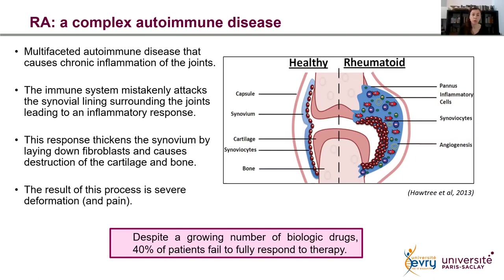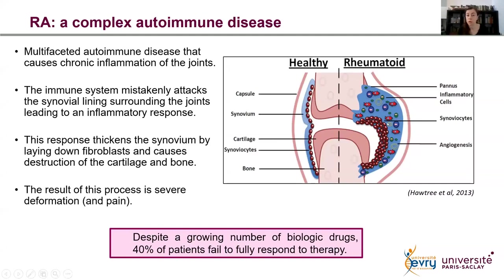Rheumatoid arthritis is a complex autoimmune disease that causes chronic inflammation of the joints. The immune system mistakenly attacks the synovial lining surrounding the joints, leading to an inflammatory response. We have sustained inflammation that is caused by the resident cells, but also by cells of the immune system that are infiltrated into the joints. This response thickens the synovium by laying down mostly fibroblasts and causes destruction of the cartilage, the sponge-like tissue, and bone. The result is severe deformation of the joints and, of course, pain.